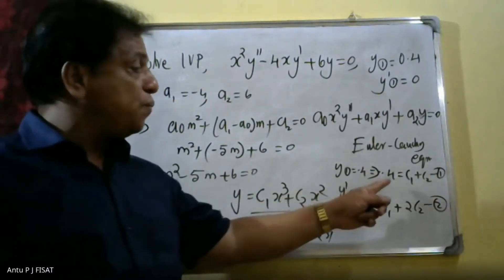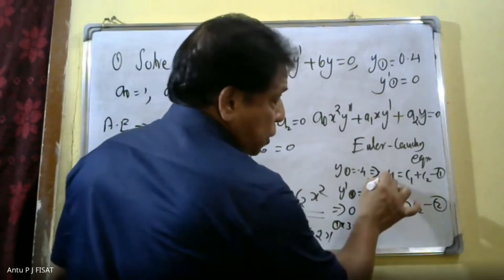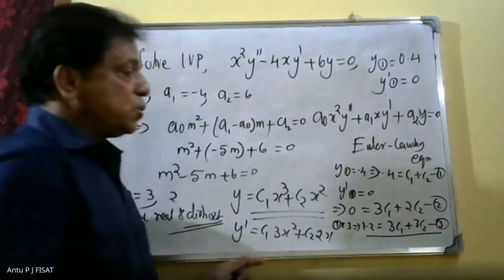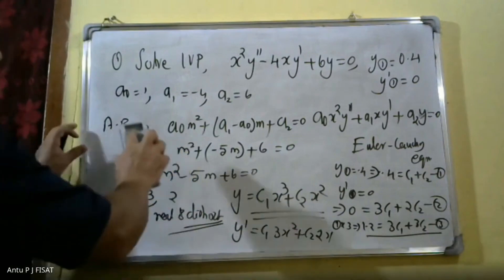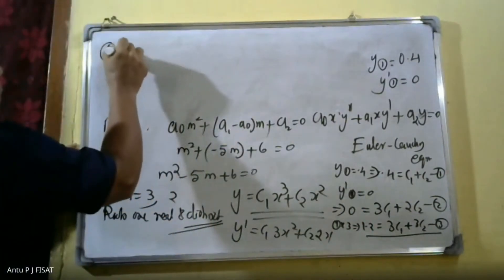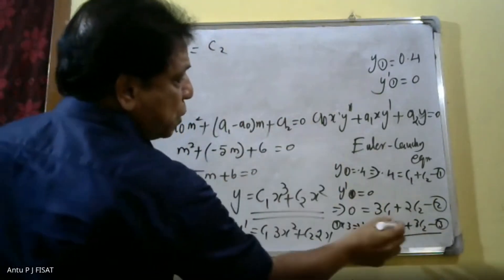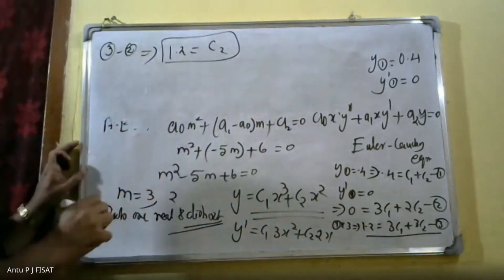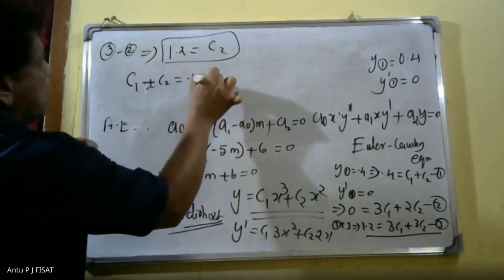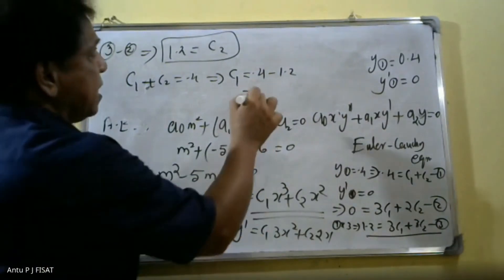Solving these two equations: multiply equation 1 by 3 to get 3c₁ + 3c₂ = 1.2 (equation 3). Subtracting equation 2 from equation 3: 3c₂ − 2c₂ = 1.2, so c₂ = 1.2. Then c₁ = 0.4 − 1.2 = −0.8.